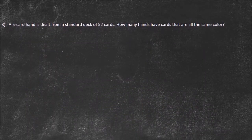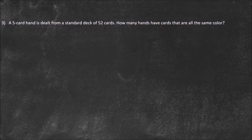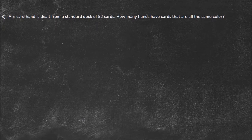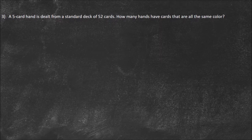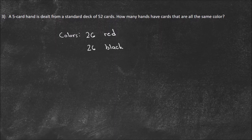All right, we have one more here — this one's not too bad. A 5-card hand is dealt from a standard deck of 52 cards. How many hands have cards that are all the same color? Is this a permutation or a combination? It's a combination, because if I have the exact same hand dealt in a different order, it's still the same hand. Order doesn't matter. Let's consider the colors: a standard deck of 52 cards has 26 red cards — hearts and diamonds — and 26 black cards — clubs and spades.